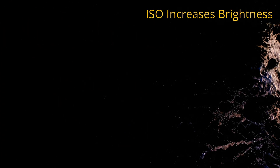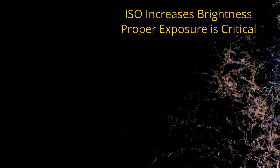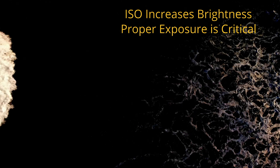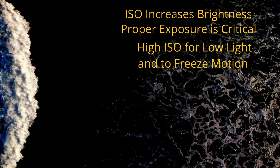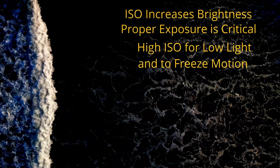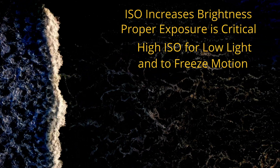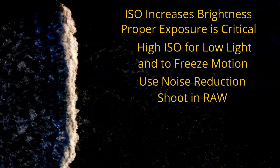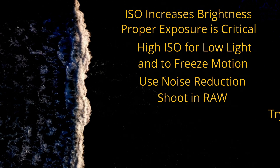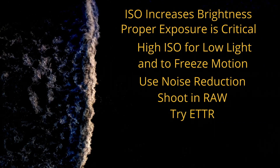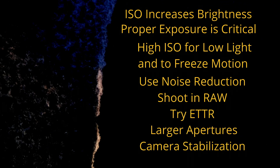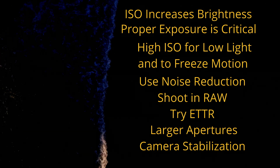A quick recap: ISO is like a volume knob for your camera's brightness. Proper exposure is key to minimizing noise. High ISO is necessary for many shooting conditions, especially in low light and when freezing motion. Use noise reduction tools and shoot in RAW for the best results. Experiment with ETTR, large apertures, and camera stabilization for better high ISO performance. Check out our other video on achieving sharpness with any camera to complement what you've learned today.